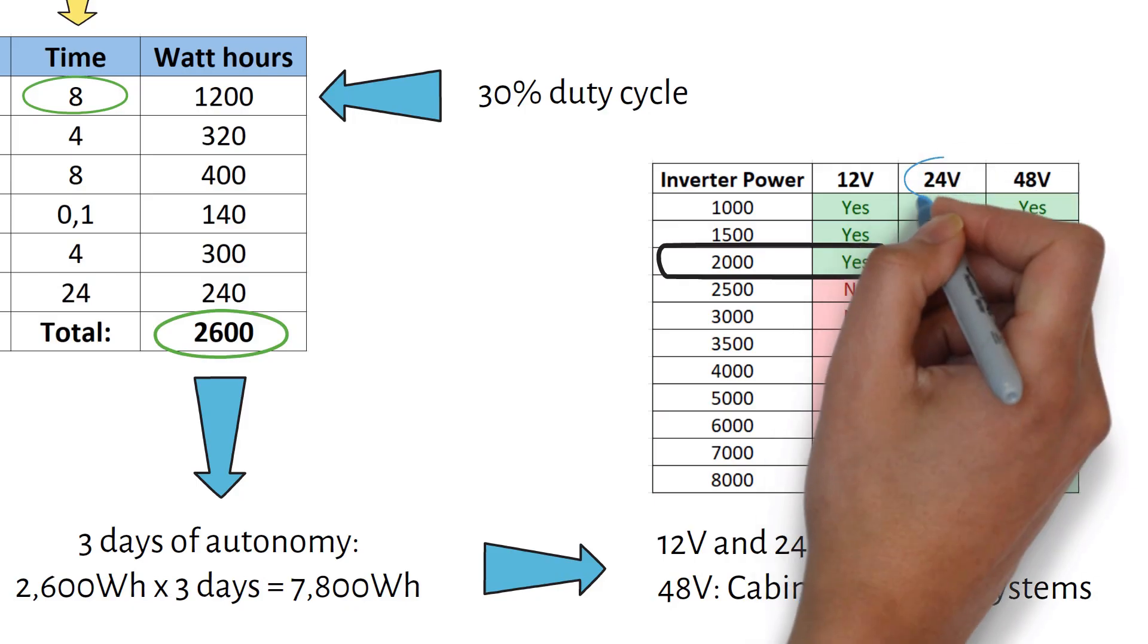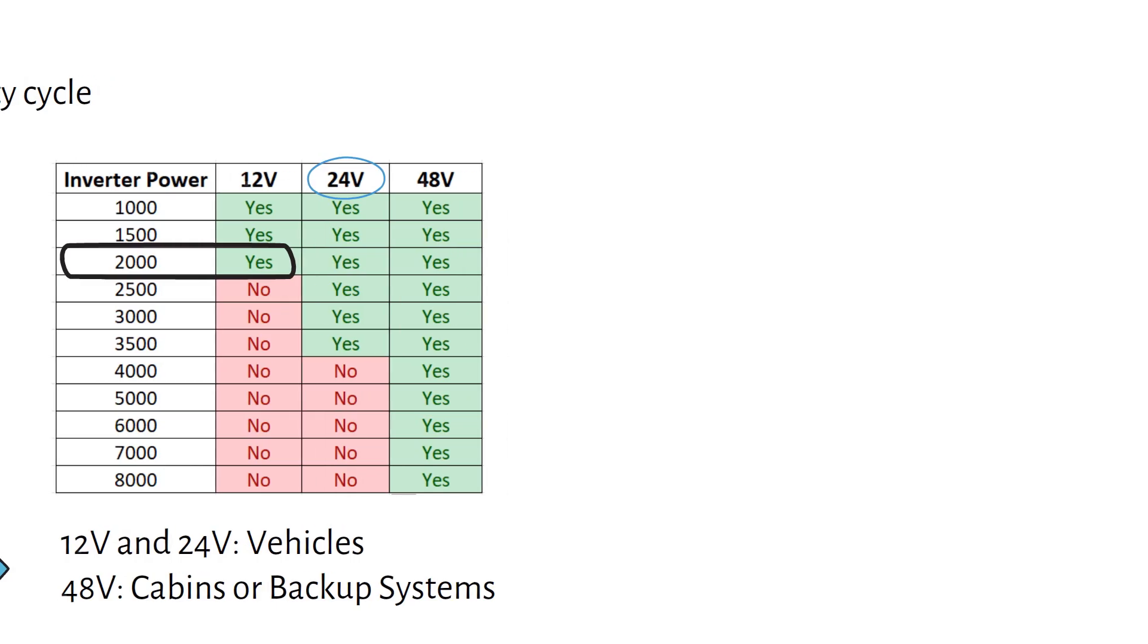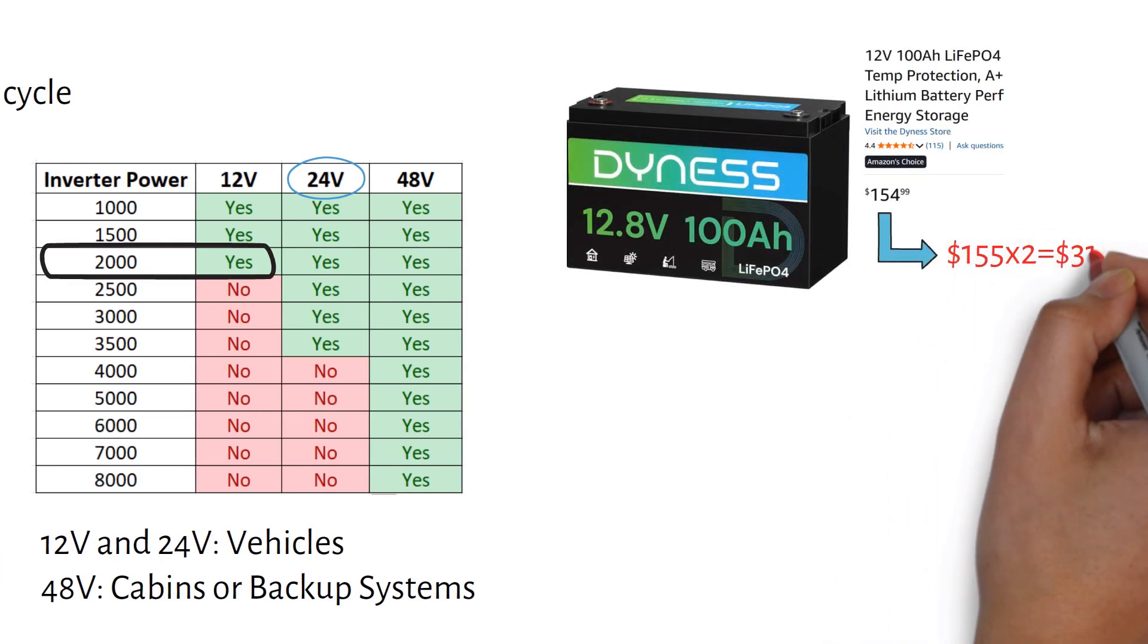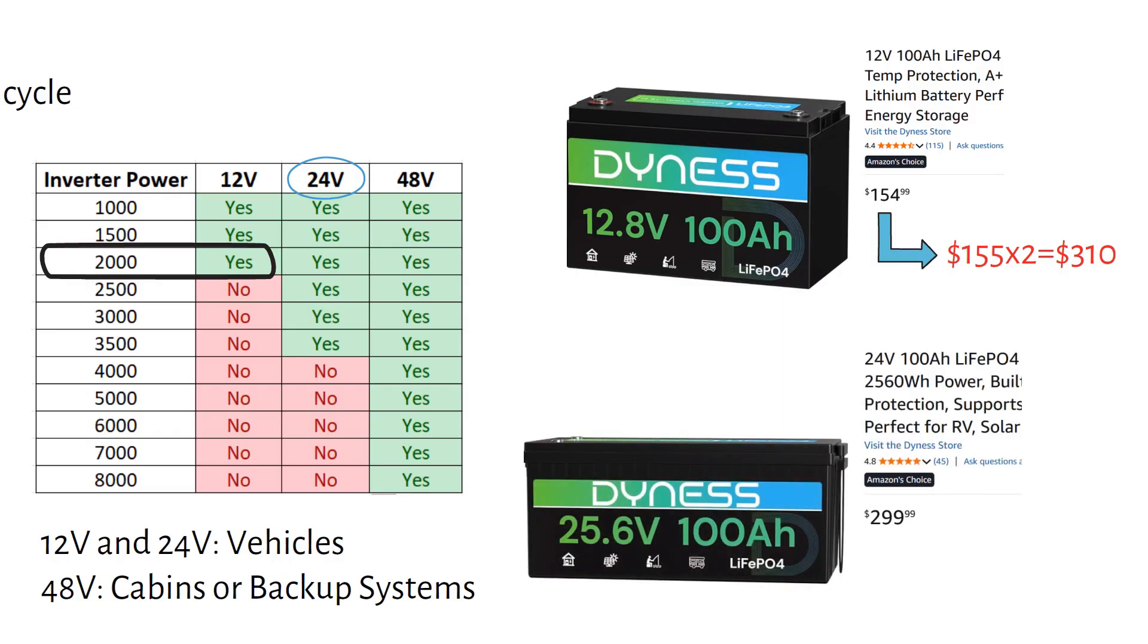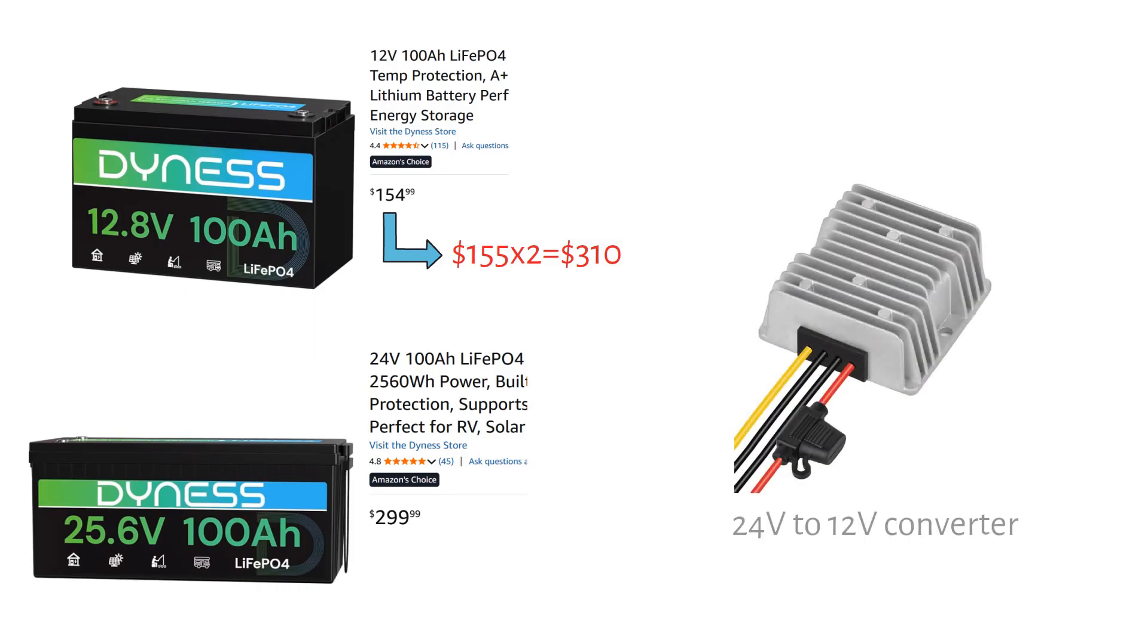However, if we use 24V, the charge controllers need to be half the size. So I'm going with a 24V system. The good news is that a 24V battery is no longer pricier than putting two 12V batteries in series. If you have 12V appliances, you can use a 24V to 12V converter.